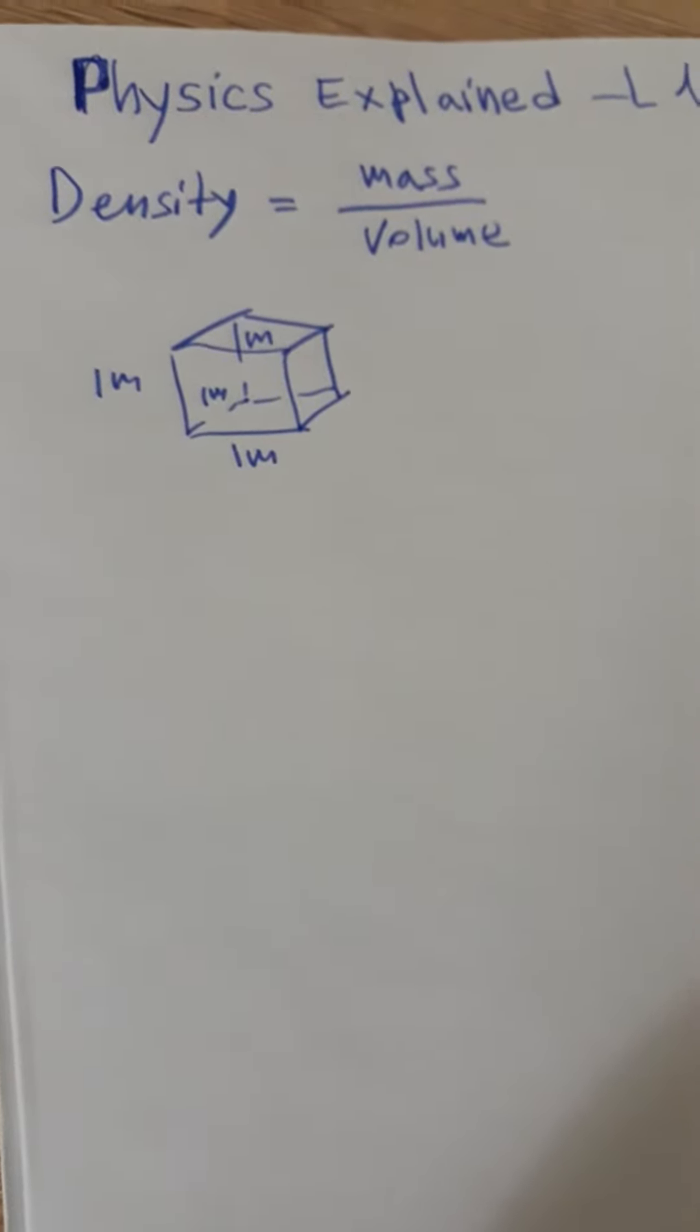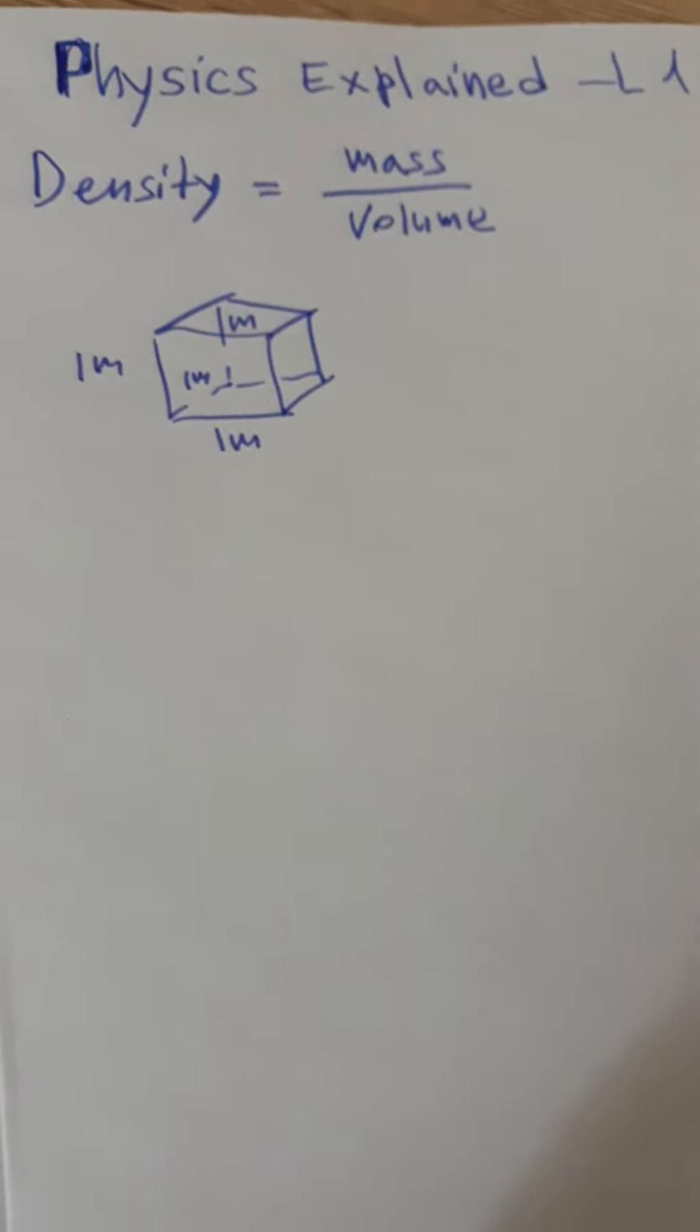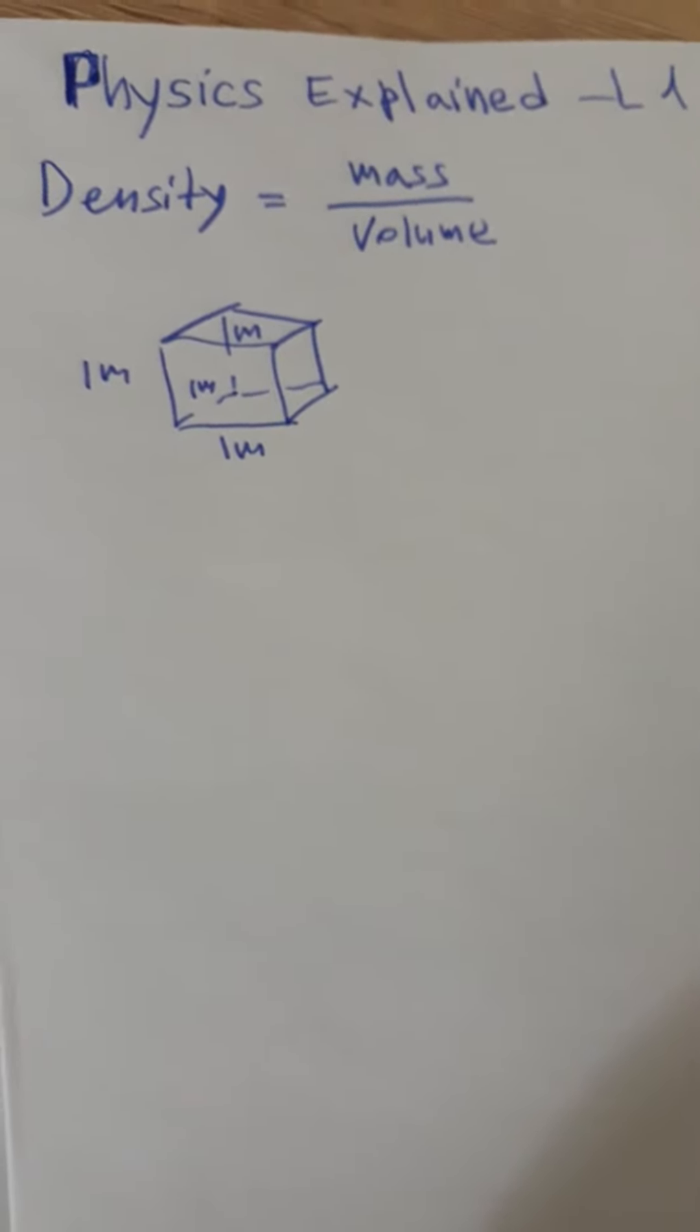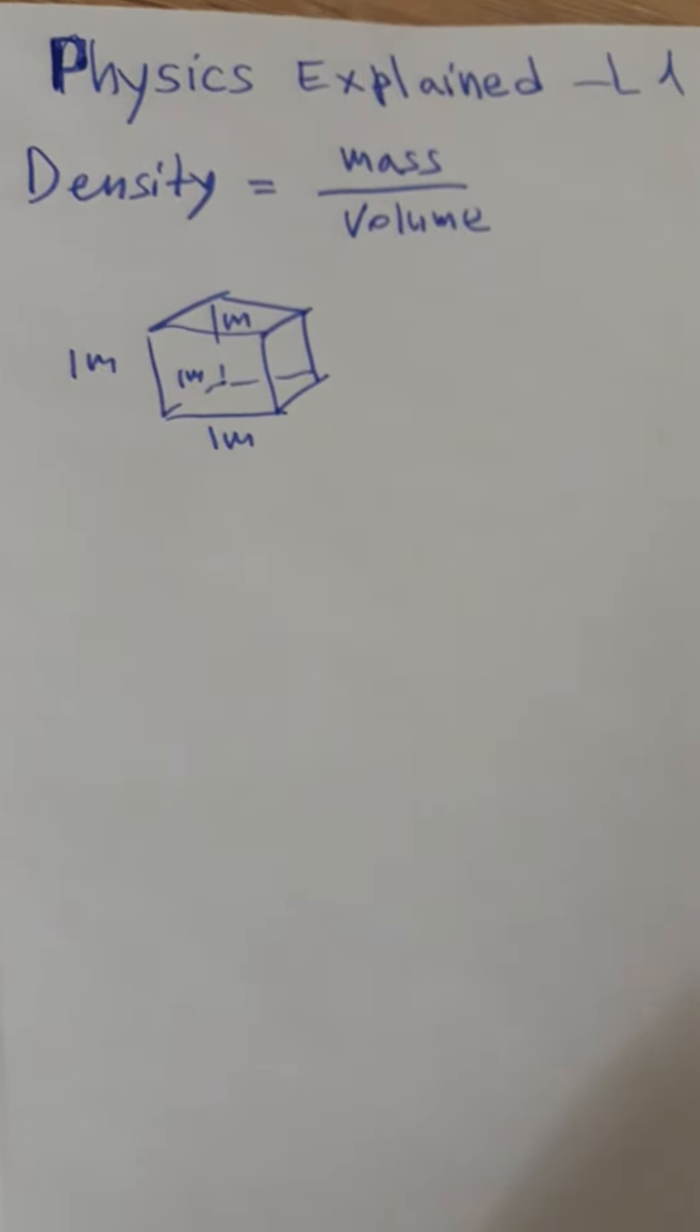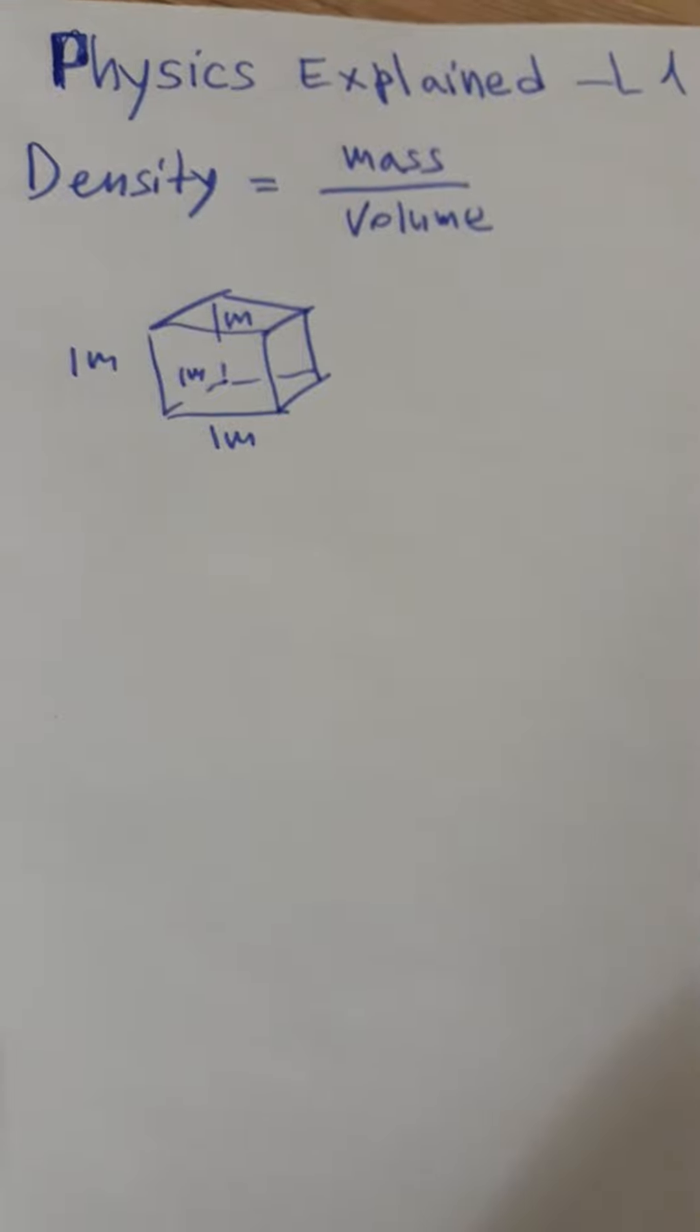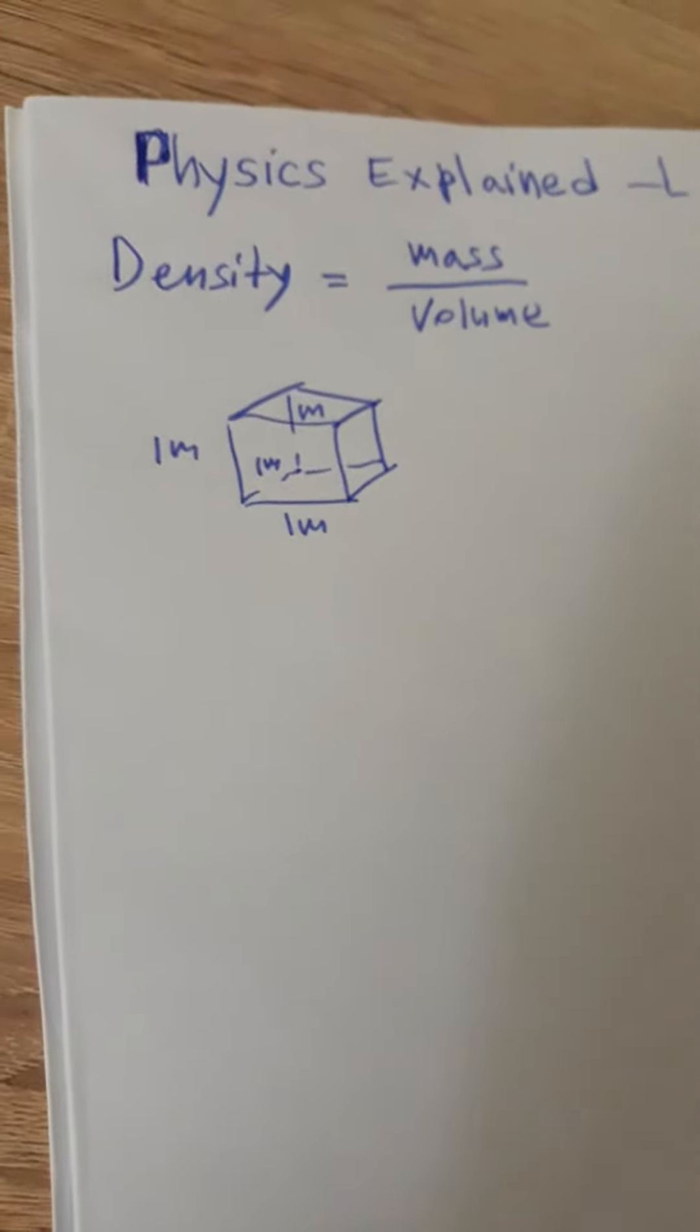That is the relation between mass and volume of one body. Let's suppose that we have a cube with sizes of 1 meter and mass of 1 kilo. So density is mass over volume.